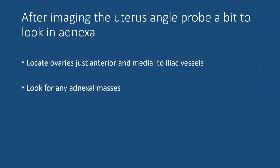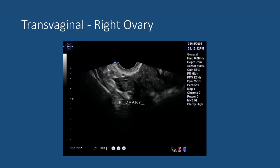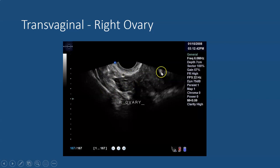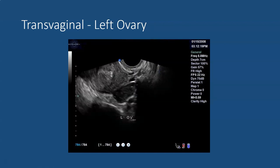After looking at the uterus we're going to angle a bit to the right and to the left obliquely, trying to identify the ovaries as well as any other adnexal masses. The ovaries can usually be identified as being just anterior and medial to the iliac vessels. This transvaginal image shows the iliac vessel with the right ovary just anterior and medial; the uterus is seen to the right of the screen. Looking in the left adnexa one can see the left ovary, and towards the left side of the screen you can see the uterus.